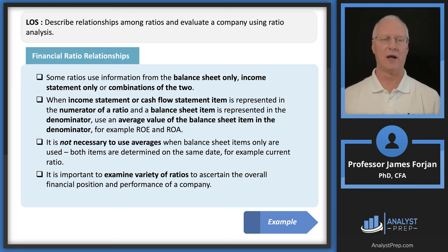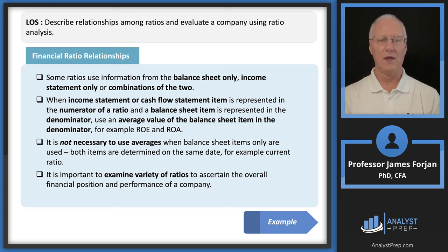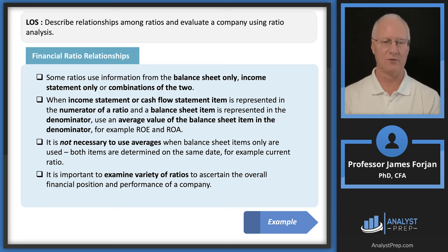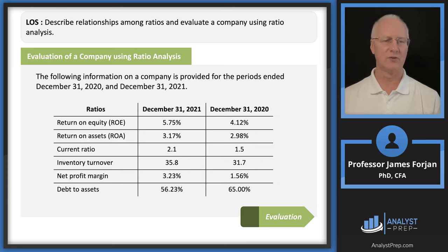Here's a summary slide: some ratios use the balance sheet, some use the income statement, some combine both, and we can go to the cash flow statement for extra information and subtlety. Important note: when only balance sheet items are used, you don't need to compute the average because they're on the same date. It's important to examine a variety of ratios.